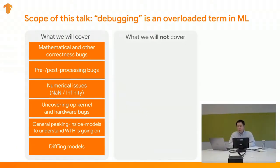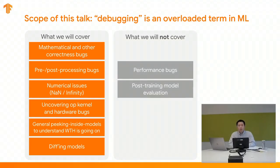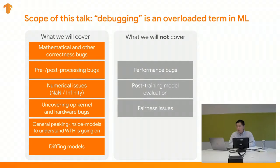What we're not going to cover are debugging cases like debugging model performance, looking at model accuracy after training, model evaluation and analysis, and how to debug fairness issues in models. Those are also important kinds of TensorFlow debugging, but they're outside the scope of this talk. There are great tools for those, like the What-If Tool, Fairness Indicators, and similar dashboards in TensorFlow.